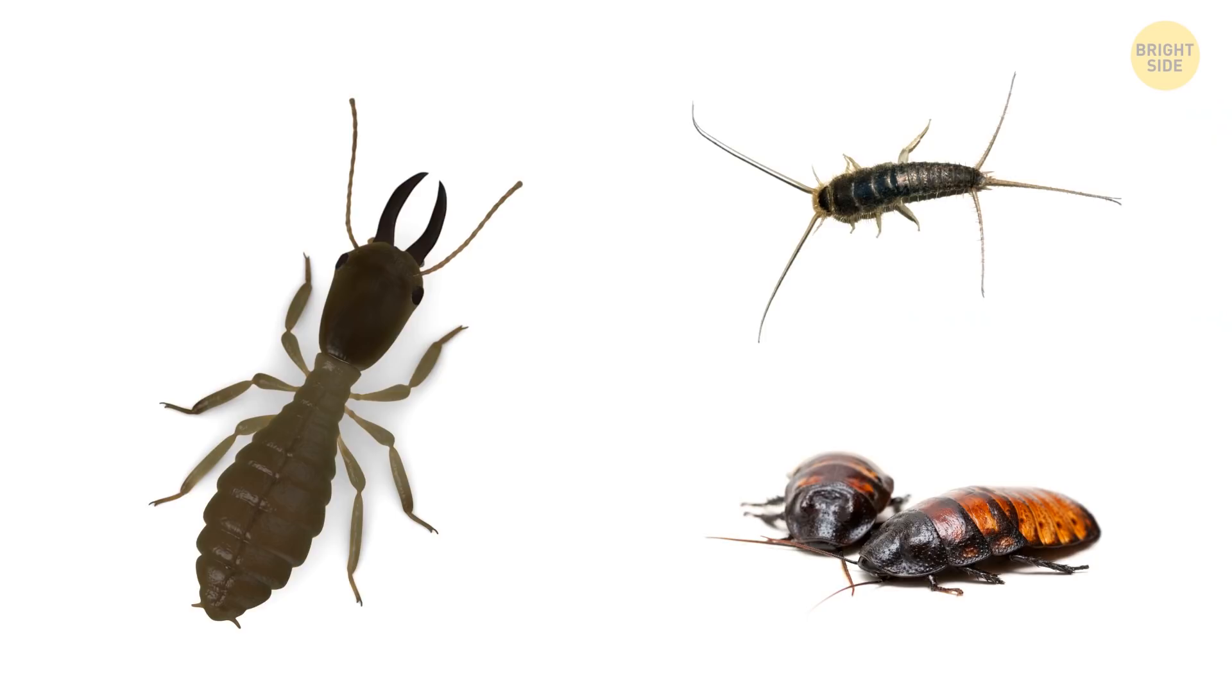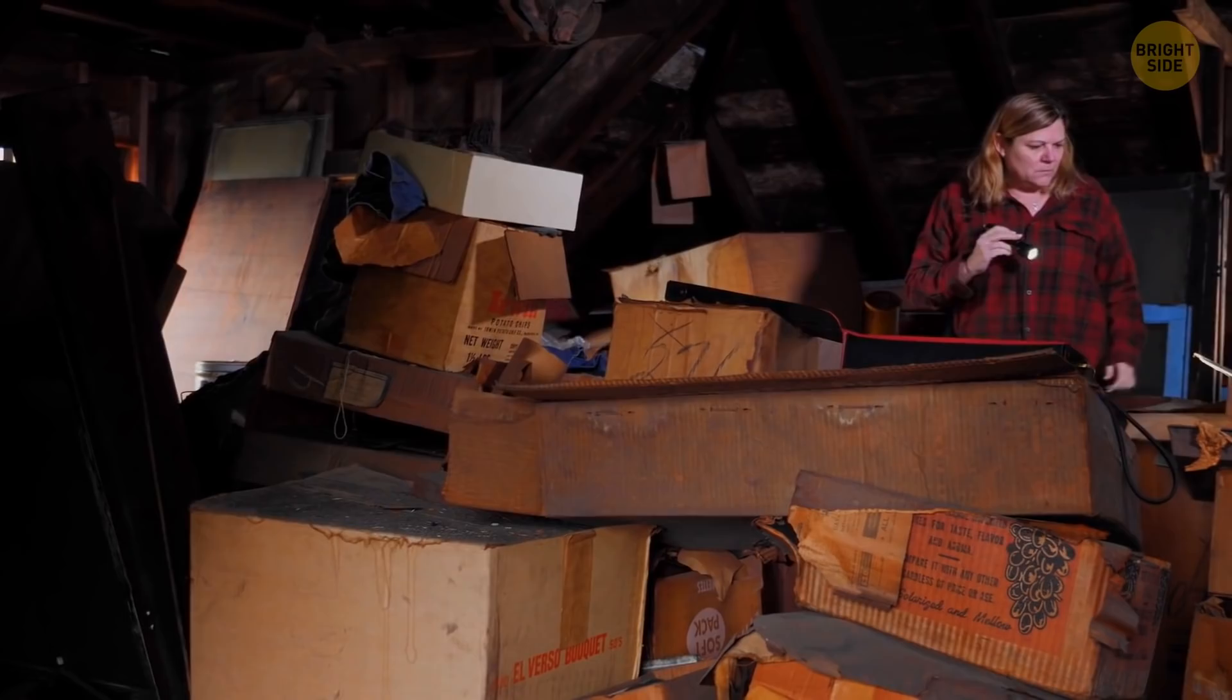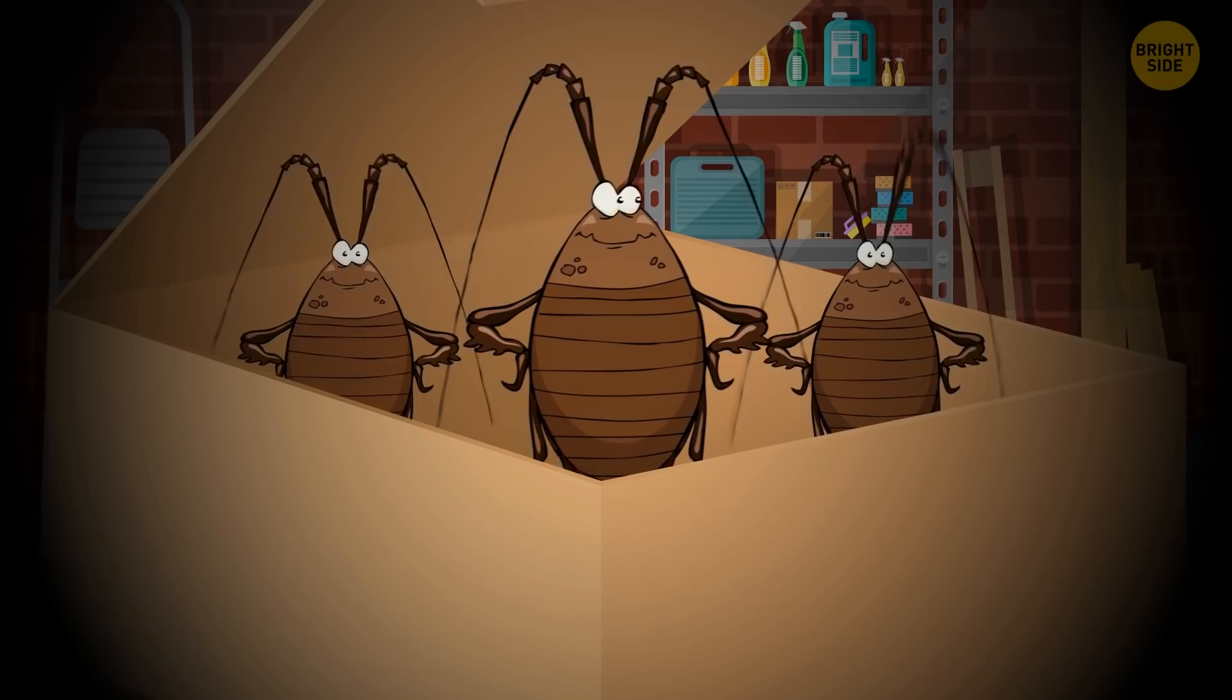Cardboard boxes. Cockroaches, silverfish, termites, and other bugs like to feed on cardboard boxes and the glue that binds them. This porous material is also perfect for them to live in, because they can saturate it with their scent. That then attracts other insects, because these little home invaders like to live in groups.